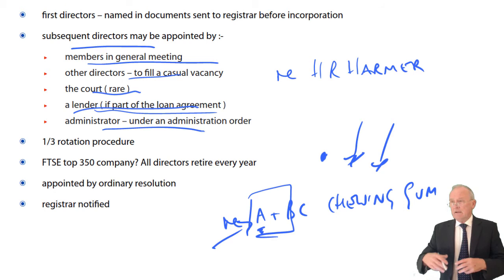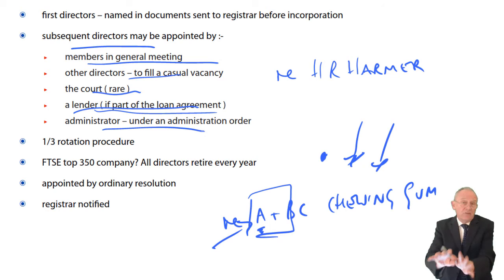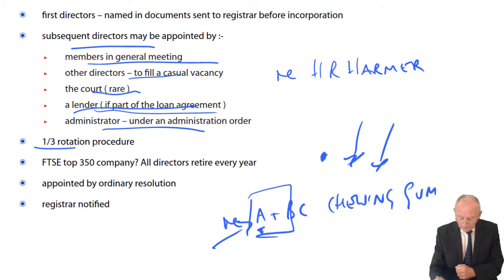An administrator, under an administration order, takes control of the company during the period of administration. In taking control, they may either elect the existing directors to assist in the administration, or they may suspend those existing directors and say, no, I'm going to bring in some new people to run the company during the period of administration.